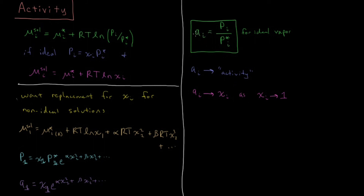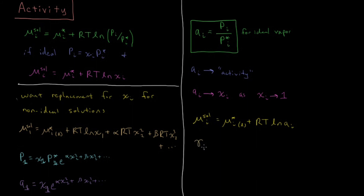Substituting the activity into the chemical potential expression, the chemical potential in solution of component i equals the chemical potential of pure liquid i under the same conditions, plus RT times the natural log of its activity. We still keep this nice short closed-form expression, using activity instead of mole fraction. Just like the fugacity coefficient describes how a gas deviates from the ideal gas law, the activity coefficient tells us how the activity of a solution component deviates from Raoult's law — deviates from being an ideal solution.